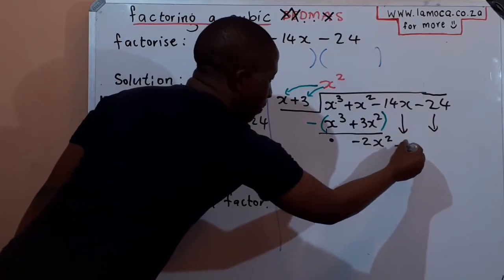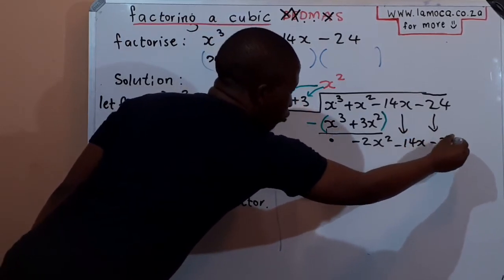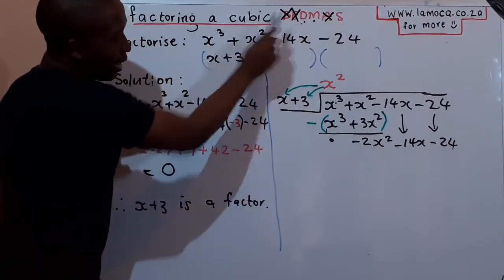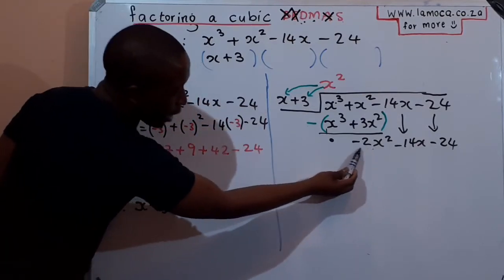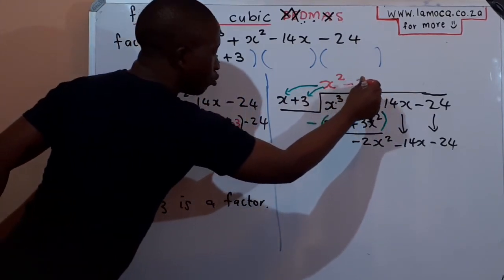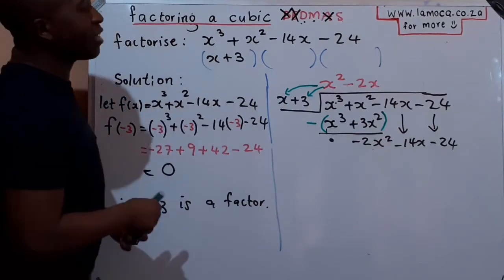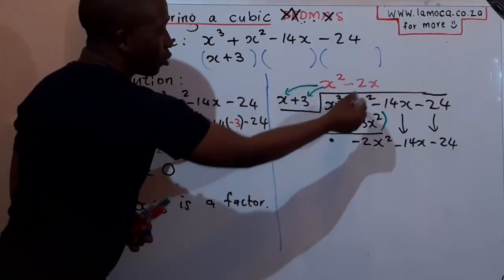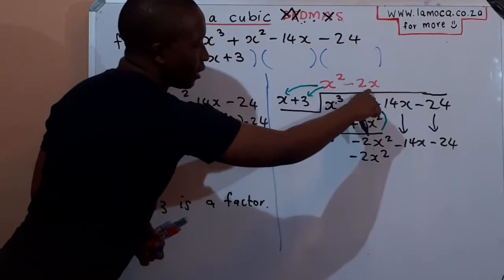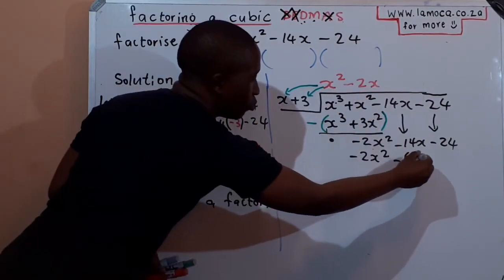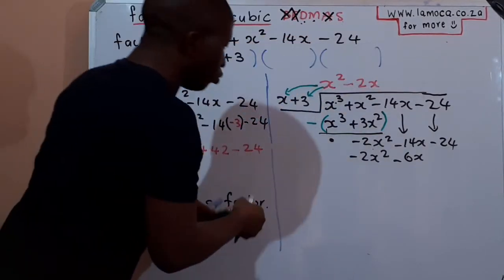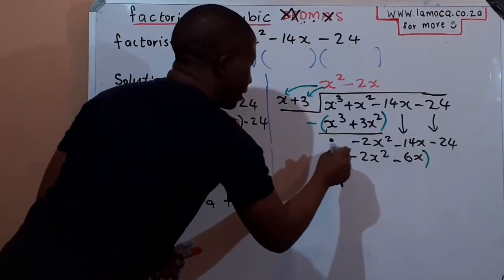Bring down the remaining terms: −14x and −24 come down alongside the −2x². Starting the second cycle — divide: −2x² ÷ x = −2x, placed at the top. Then multiply: −2x × x = −2x², and −2x × 3 = −6x.